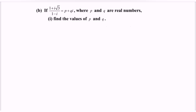Hello everyone, welcome to my channel. In this video, I'm going to discuss an example for complex numbers. If (1 + i√3) / (1 - i) is equal to p + qi, where p and q are real numbers, find the value of p and q.